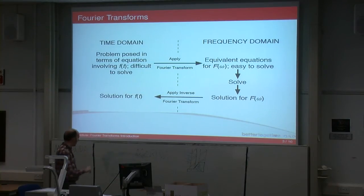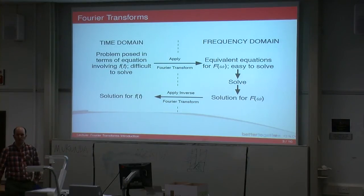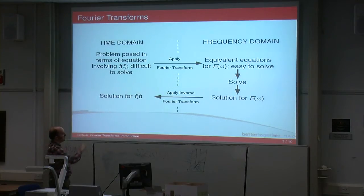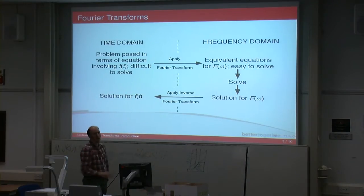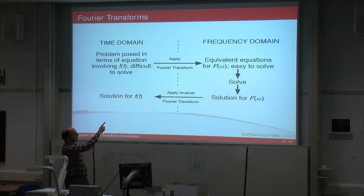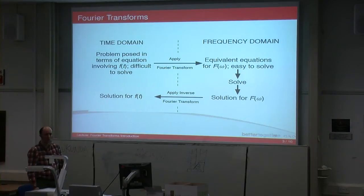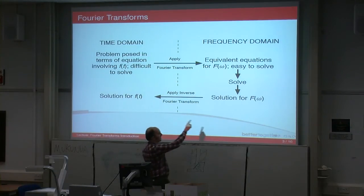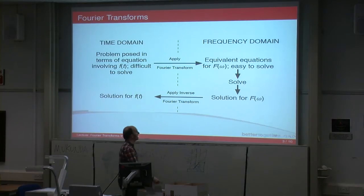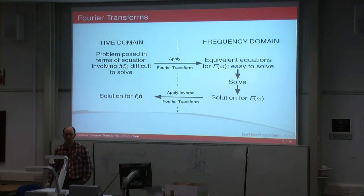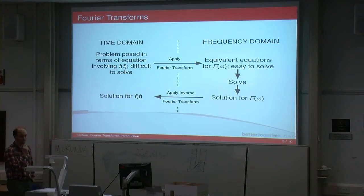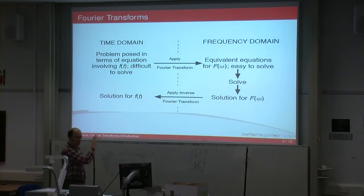Here's a diagram of what I've just described. You've got your problem in the time domain — it's posed to you there and it's difficult to solve. You apply the Fourier transform and that takes you over to the frequency domain, so instead of something in terms of time it's in terms of omega, your frequency. You get an f(omega), which is easier to solve. You solve it, then apply the inverse transform to get back to the time domain.